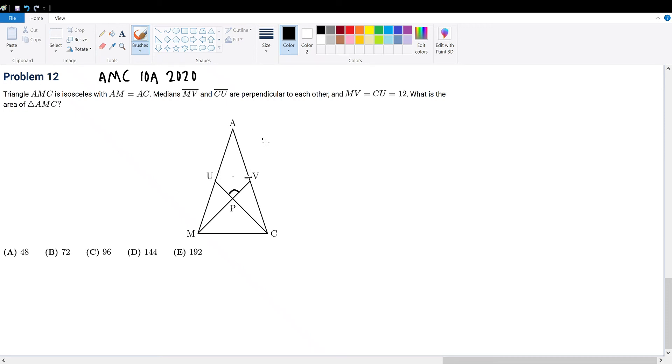AMC 10A 2020 Problem 12: Triangle AMC is isosceles with AM equal to AC. Medians MV and CU are perpendicular to each other, and MV equals CU equals 12. What is the area of AMC?